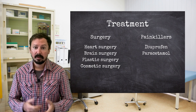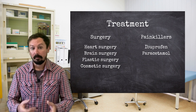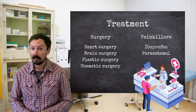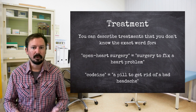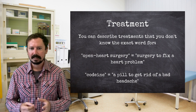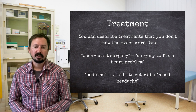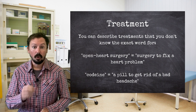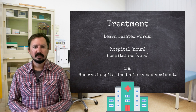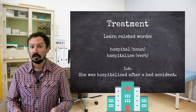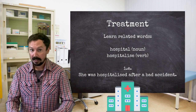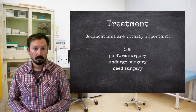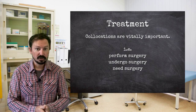As for medications, you might want to learn a few common types like ibuprofen or paracetamol. Again, this could help you in IELTS, but also in daily life if you decide to move to an English-speaking country. However, don't worry about learning lots of different vocabulary for this area. Just knowing the basics is enough, and you can always use language to avoid specific terminology. For example, 'surgery to fix a heart problem' would be a fine alternative to 'open heart surgery'. Try to learn related groups of words too. You should know the word 'hospital', but also keep in mind that 'hospitalize' is a verb — for example, 'she was hospitalized after a bad accident'. Learn collocations as well: we can say 'perform surgery', 'undergo surgery', and 'need surgery'.